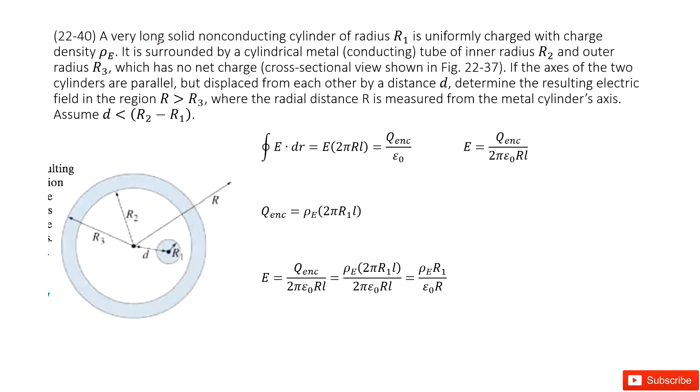So we can see we have a very long solid non-conducting cylindrical object. The radius is R1, and then the charge density is ρ_E. And then it's surrounded by a cylindrical metal conducting tube.